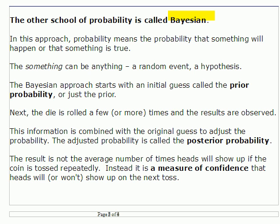There are several steps in Bayesian statistics. First, Bayesian statistics can be applied to anything, even a hypothesis. The other approach is applied only to random events. In the Bayesian approach, you start off with an initial guess called the prior probability, or just the prior. This is usually exactly what you do in the frequentist approach — if you're rolling that die, you'd probably start off by saying there's a one-sixth chance that the two will show up.